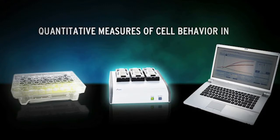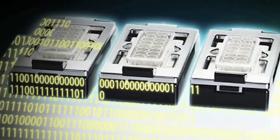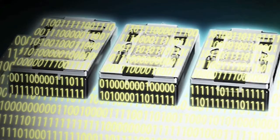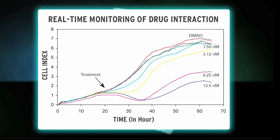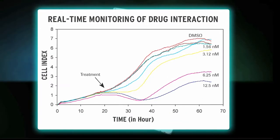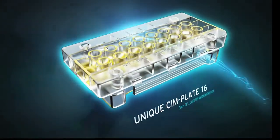Capable of providing quantitative measures of cell behavior in real time without exogenous labels, the analyzer automatically transmits data to the control unit computer. This computer captures all measurements as they occur, displaying changes on screen within moments.